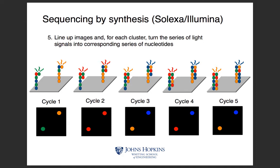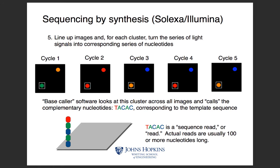DNA polymerase goes from 5' to 3', so in the first cycle you can only add to that base, and when you remove the inhibiting group you can add to the second one. There is a catch which I'll explain in the next slide.